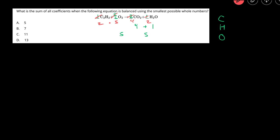And then we can just add the coefficients together to figure out the final answer. Two plus five is seven, plus four is eleven, plus two is thirteen, so the answer here is thirteen.